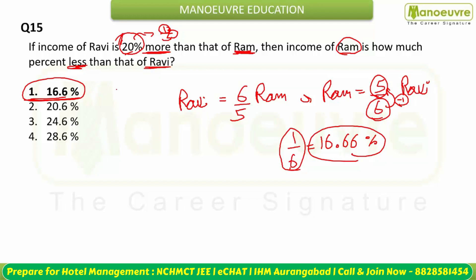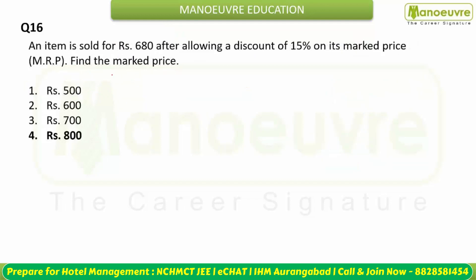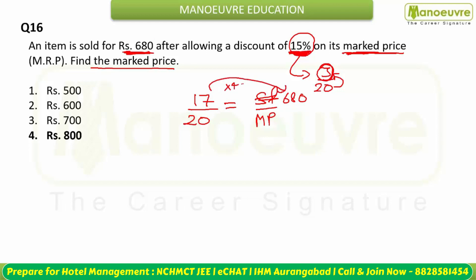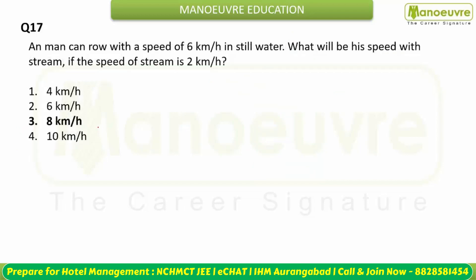An item is sold for ₹680 after a 15% discount on its marked price. 15% = 3/20, meaning for every ₹20 marked, ₹3 is discount and ₹17 is selling price. Since SP = ₹680 = 40 × ₹17, the marked price = 40 × ₹20 = ₹800.